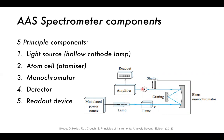We also have a modulating device like a shutter or chopper, which can chop the light to produce it in packets. Then we have an amplifier to amplify the signal, and a readout device — could be a computer or simply a screen. So the five principal components are: the light source (typically a hollow cathode lamp), the atom cell or atomizer, the monochromator, a detector, and a readout.